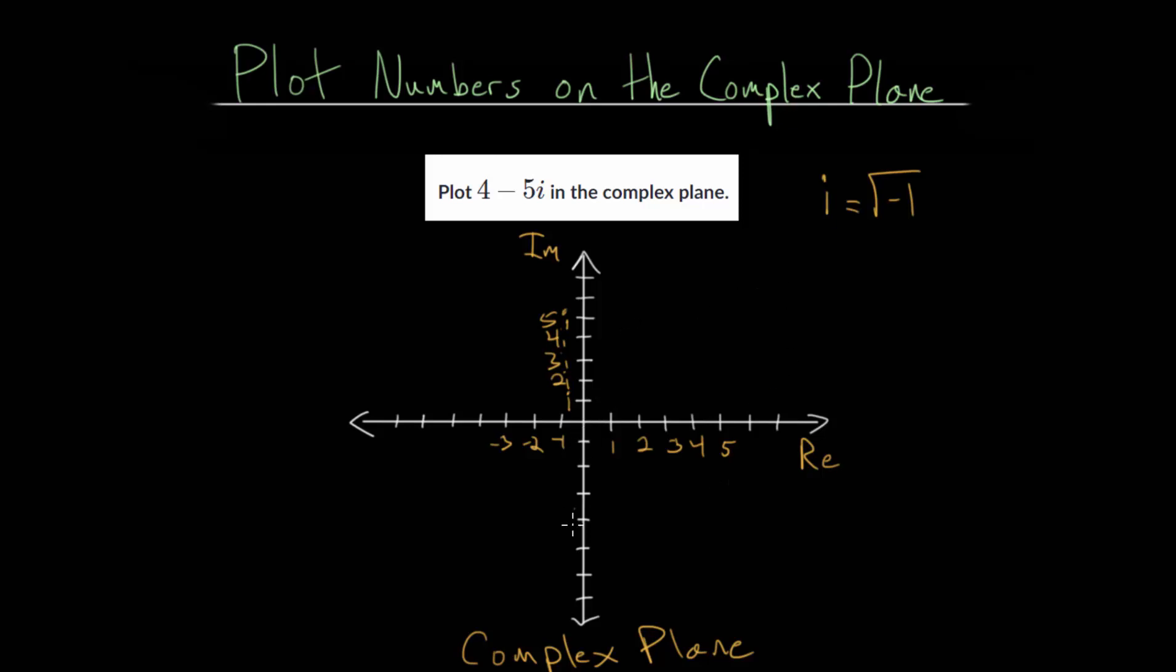Likewise, counting down, this first tick mark below is minus i, then minus 2i, minus 3i, minus 4i, and so on. So it's very similar to the xy plane, except for the vertical axis, where instead of counting up by numbers, we're counting up by multiples of that imaginary unit.